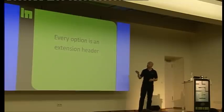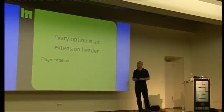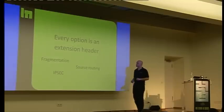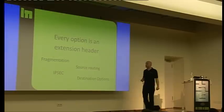How does this work? Every option, and this includes fragmentation, is an extension header. This is fragmentation, this is source routing, we still have that, because IPv6 is very secure. IPsec, destination options, and some other stuff. That's all in extensions.